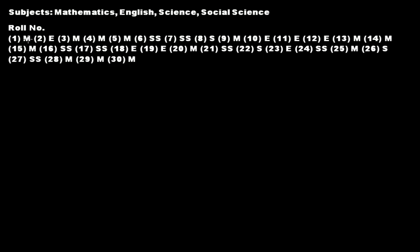M is for mathematics, E represents English, SS represents social science, and S represents science. This list tells us that the student having roll number 1 likes mathematics more than the other subjects, roll number 2 likes English more, and roll number 6 likes social science more than other subjects.